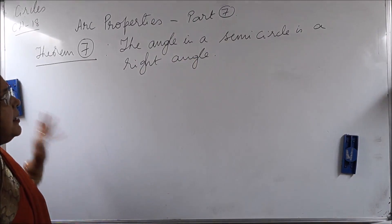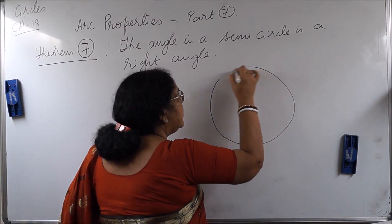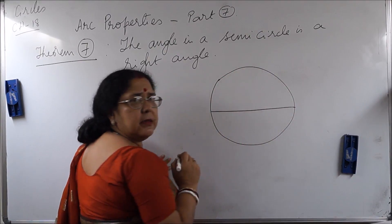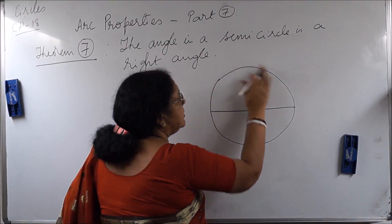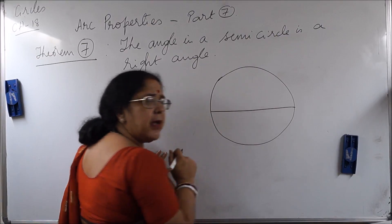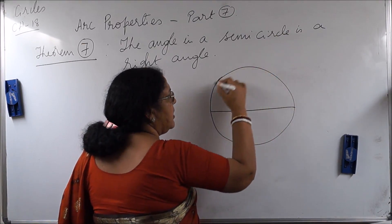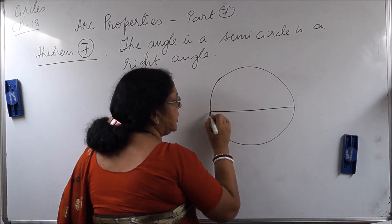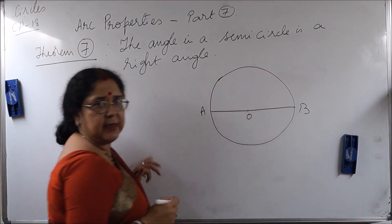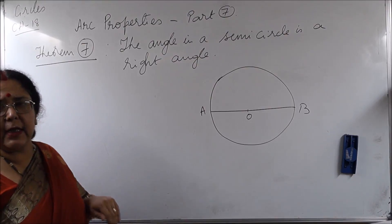So that means if you have a semicircle — semicircle is the region bounded by the diameter and the arc. These are the two segments. The semicircle is the entire thing: half of the circumference of the circle plus the chord AB, which is the diameter. A chord which passes through the center of the circle is the diameter.